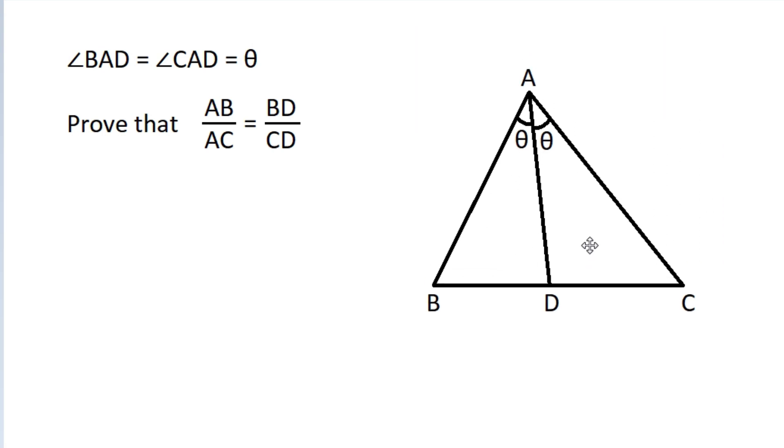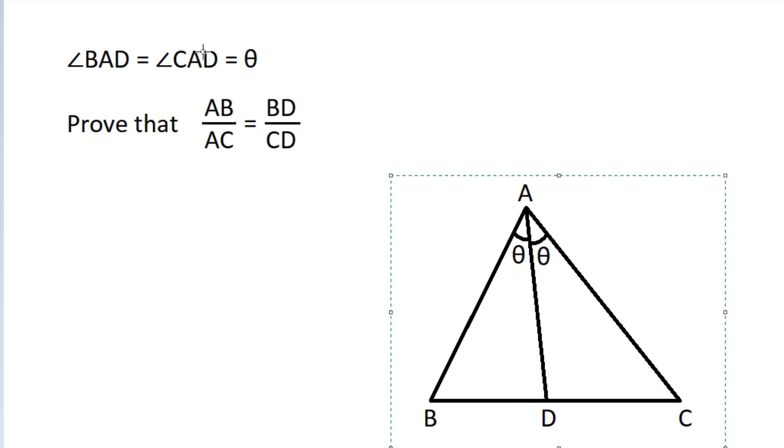So, if we draw a line parallel to DA from C and extend BA, suppose this point is E. And CE is parallel to DA. This is our construction.